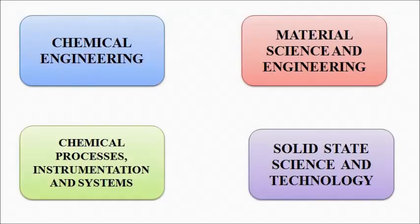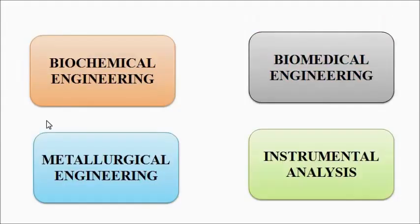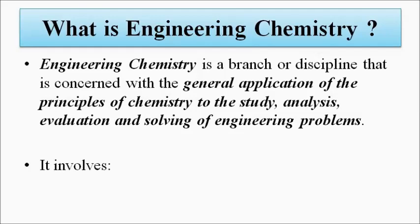The various fields in which chemistry is applied in the engineering domain include chemical engineering, material science and engineering, process control and instrumentation, chemical process instrumentation and systems, solid-state technology, biochemical engineering, biomedical engineering, and medical science. There are also various other fields where the principles of chemistry come into play for solving a problem.